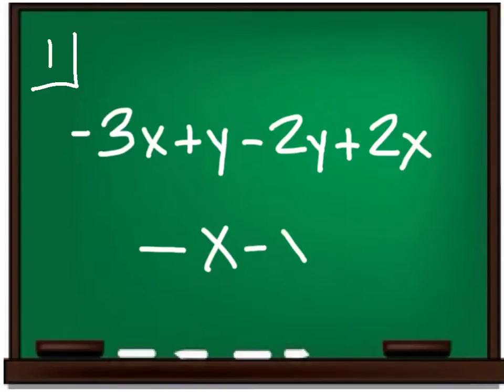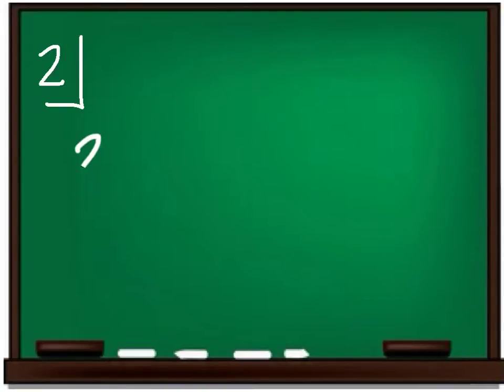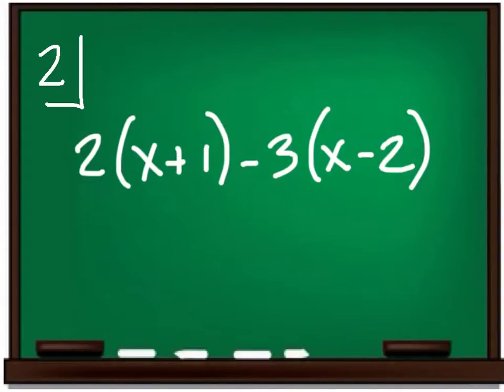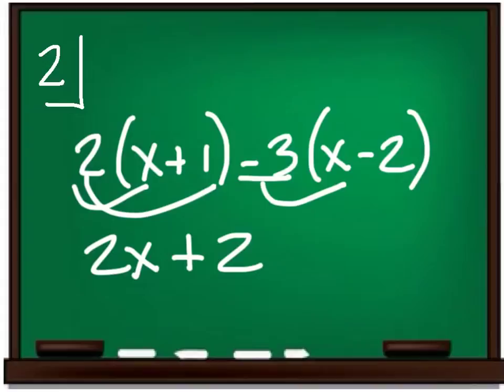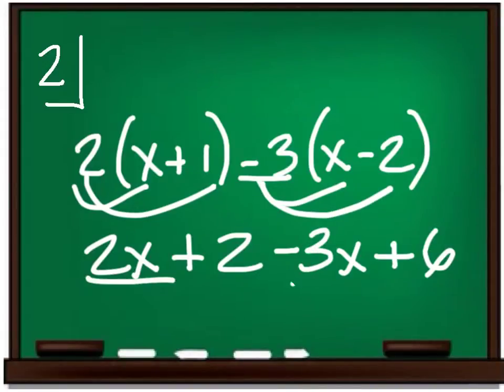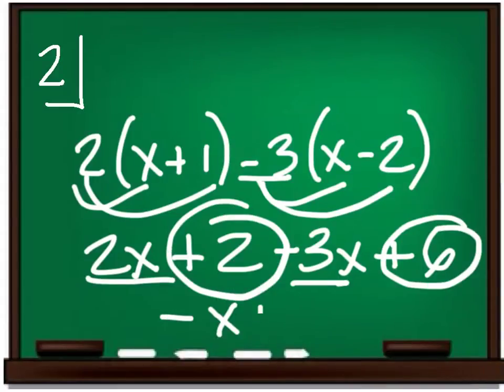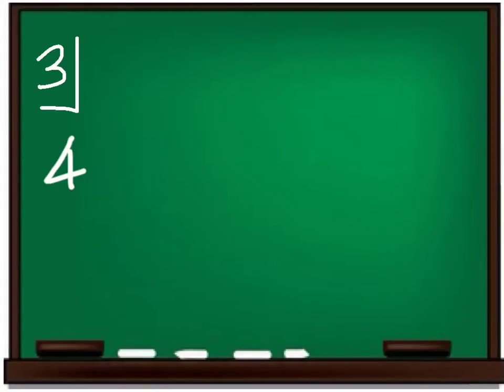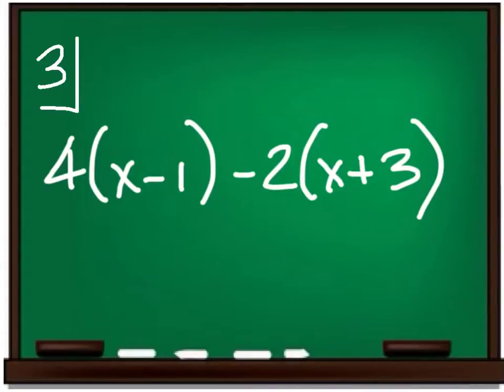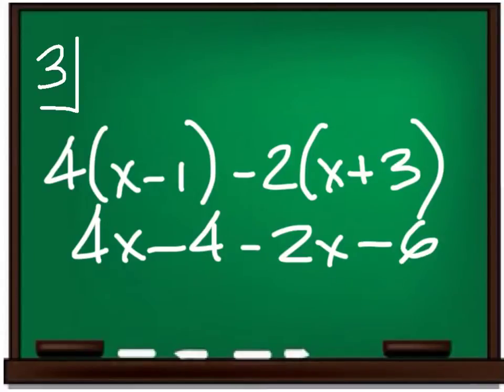The answer should be negative x minus y. 2 times x, 2 times 1, negative 3 times x, negative 3 times negative 2, that's a negative x, and this is 8. This should be 4x minus 4 minus 2x minus 6. That's going to be 2x minus 10.